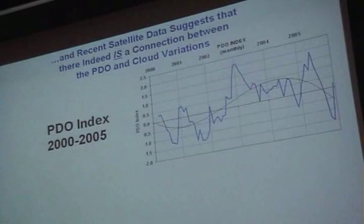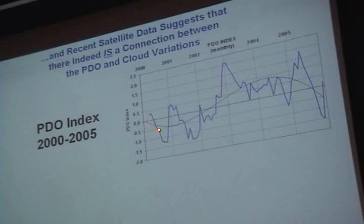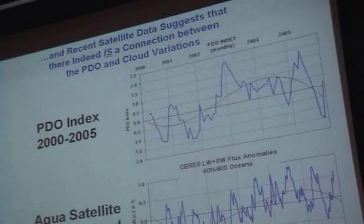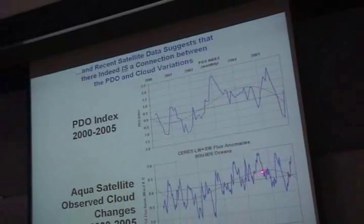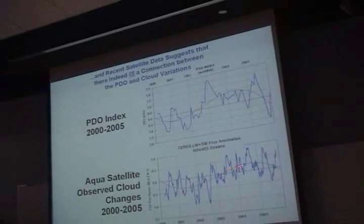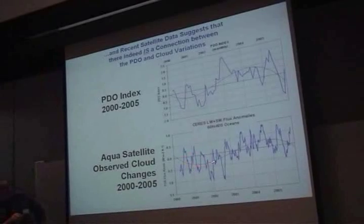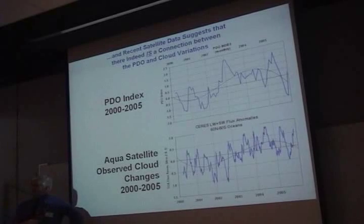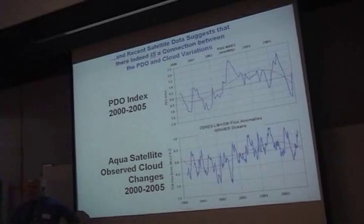But if we just look at the last five years — here's the PDO index zeroed in on the last five years. I put a smoothed curve through it. When you look at the behavior of clouds from one of the other instruments on the satellite, you do indeed see that during the positive phase, there's an accumulation of energy in the system causing warming, and during the negative phase, there's an extra loss.